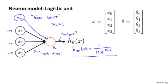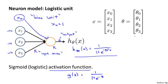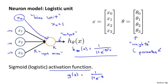One last bit of terminology: in neural networks, we sometimes say this is a neuron with a sigmoid or logistic activation function. This activation function is just another term for the non-linearity g(z) = 1 / (1 + e^(−z)). I've been calling θ the parameters of the model and will mostly continue to do so, but in the neural network literature you may also hear people refer to weights of a model — weights means exactly the same thing as parameters.